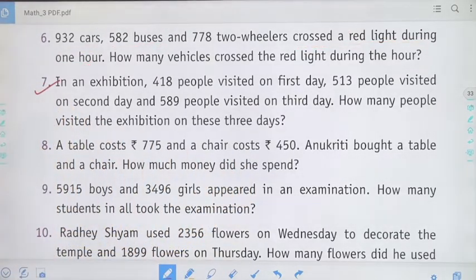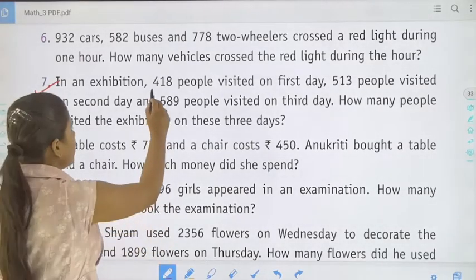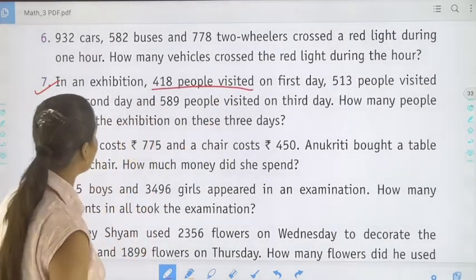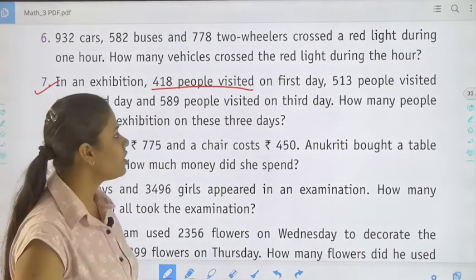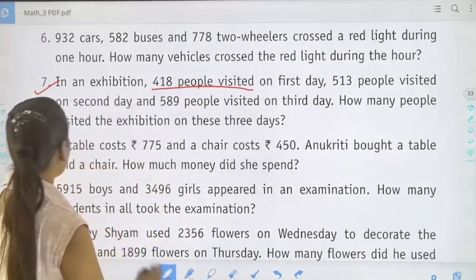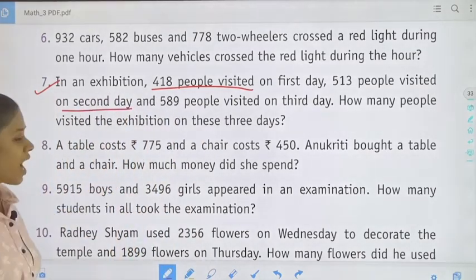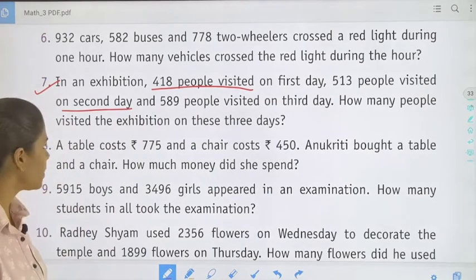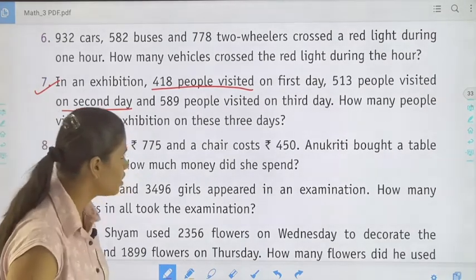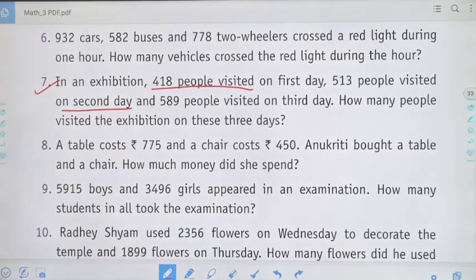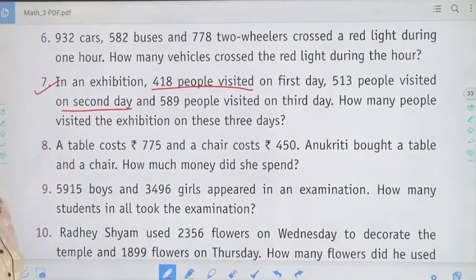Next question, that is question number 7. In an exhibition, 418 people visited on the first day, 513 people visited on the second day, and 589 people visited on the third day. How many people visited the exhibition of these three days? We have to find three days of the exhibition population.